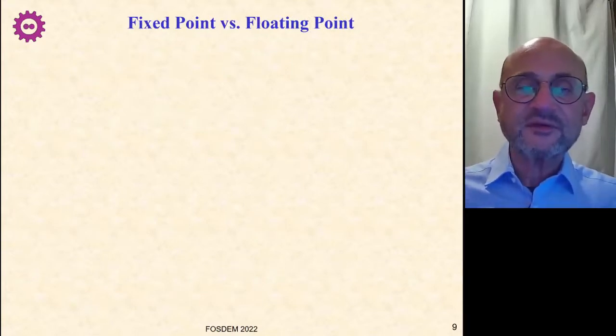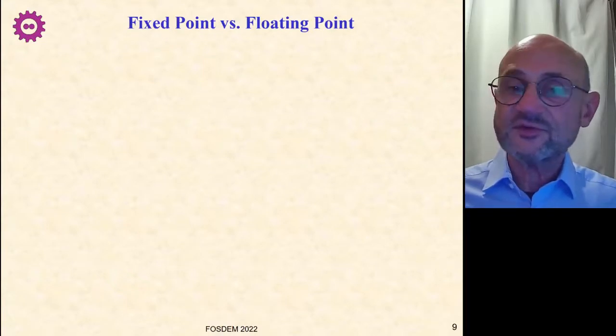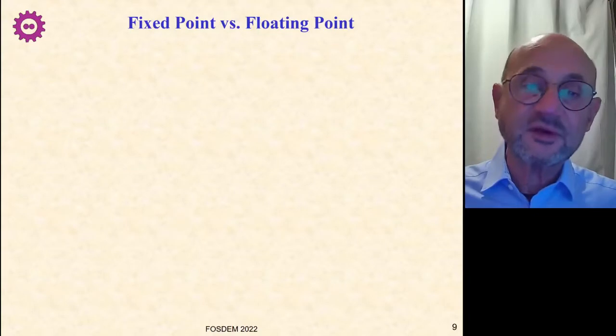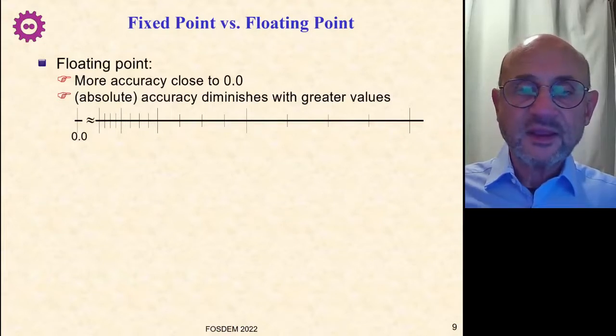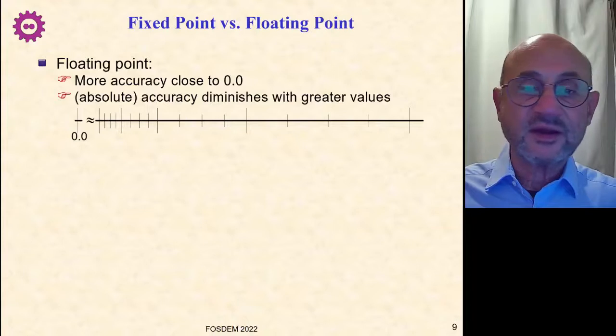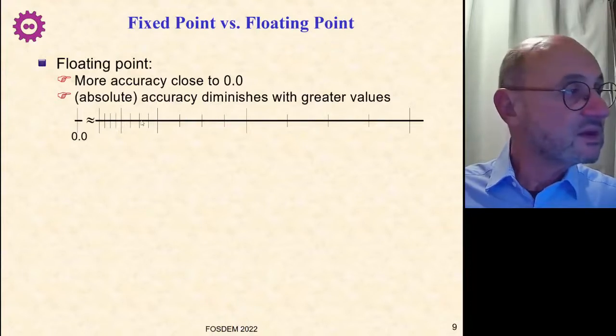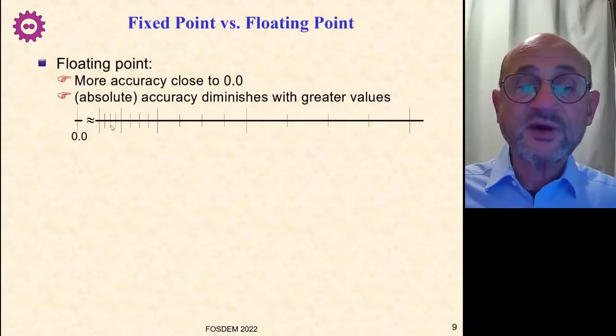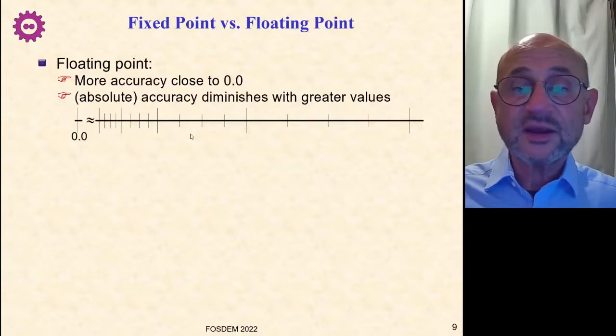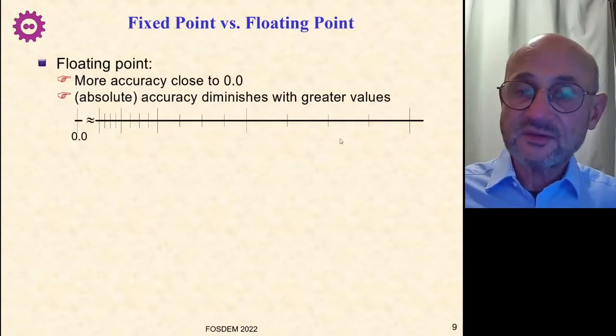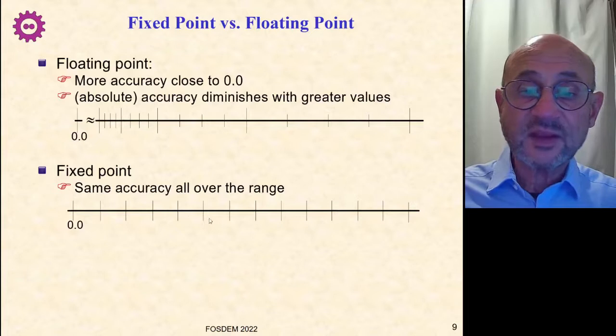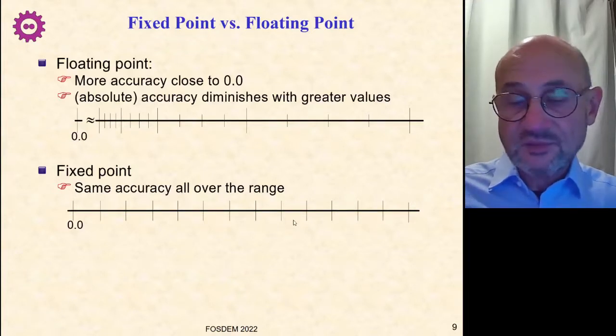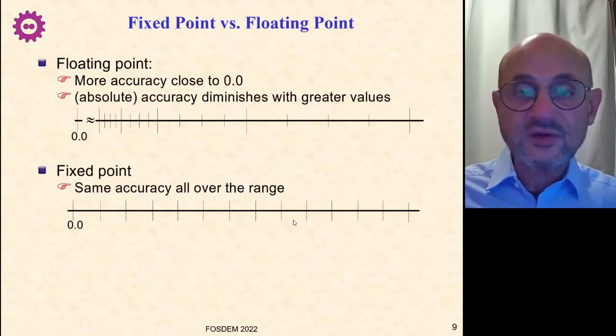I'll stress a little bit those fixed points because that's something that most of you presumably have not encountered in other languages. A floating point has that kind of representation where numbers are very close to each other when you are close to zero and as you go farther from zero, the gap between two numbers gets wider and wider. For fixed points, you have the same gap between numbers over the whole range. So depending on what you need, one or the other might be more appropriate.